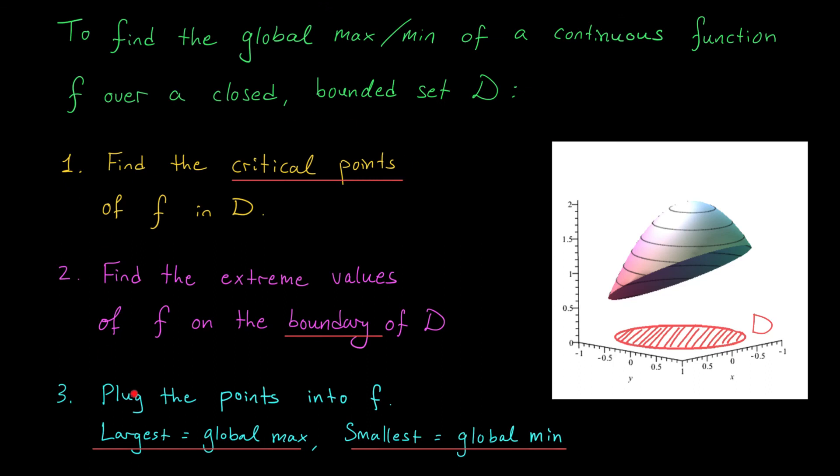Here I've written down the process for finding global extrema that I described to you on the last slide. In particular, if you're looking for the global max or min of a continuous function over a closed and bounded set D, well, we know that the global max and min could occur at critical points. So let's start by looking for critical points of our function that lie in this region D.